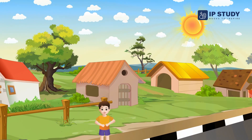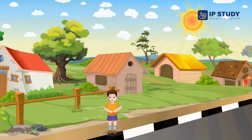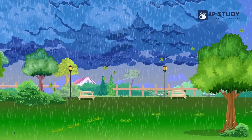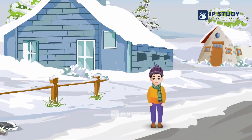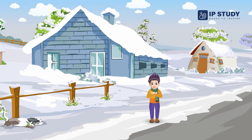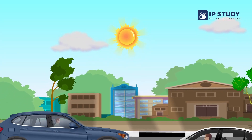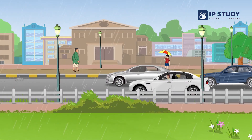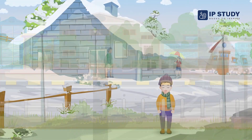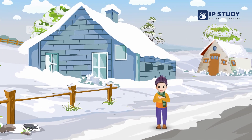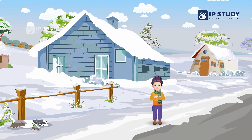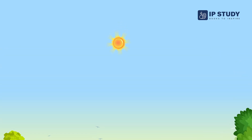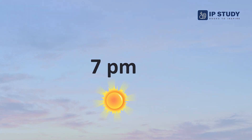In India, autumn overlaps with the late monsoon, making it much harder to notice. It is the brief period between the end of the monsoon rains and the onset of winter. The temperature in autumn is very pleasant as it moves from summer heat to the winter chill. This season is the last break of fresh and beautiful weather before the cold of winter. By the onset of autumn, the days start becoming shorter and the nights longer.